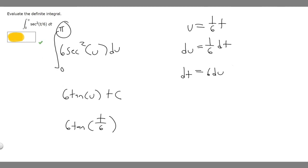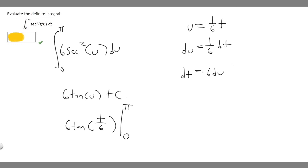We've got to evaluate it at our lower bound and upper bound. We're going to plug pi into this to get some value, then minus whatever we get when 0 is plugged in. Let's start by plugging in pi. So we have 6 times the tangent of pi over 6.